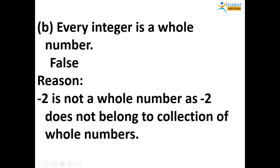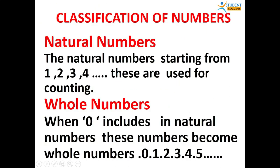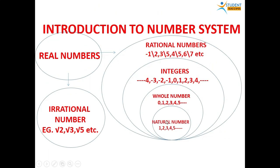Second statement: every integer is a whole number. The answer is false. It is not possible that every integer is a whole number. For example, minus 2 is not a whole number because minus 2 does not belong to the collection of whole numbers. However, every whole number is an integer. From the diagram, it is clear that minus 2 does not belong to whole numbers, so every integer is not a whole number.